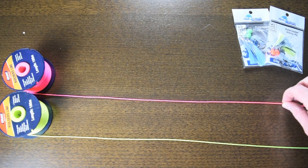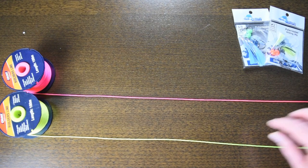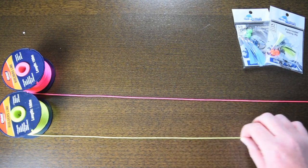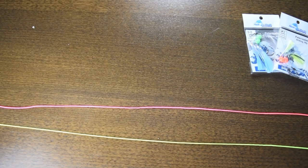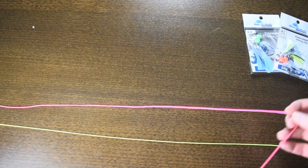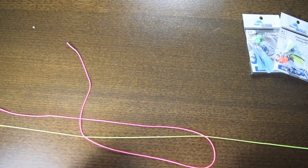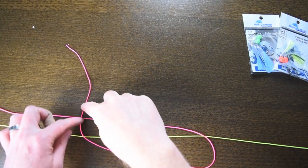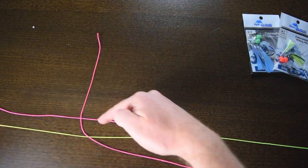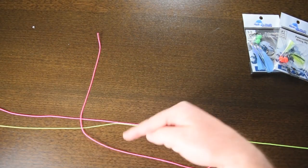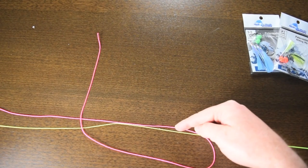We're going to say that the pink is the main line and the yellow here will be your leader. What you want to do is just make a loop and pass it right over to here so it'll look like this to start with. Essentially what you're going to do here is take this line here, the main line, and wrap it around about five times through this loop here.